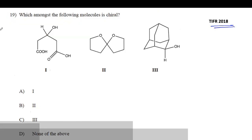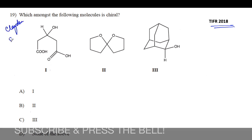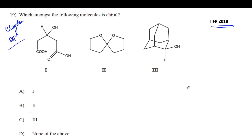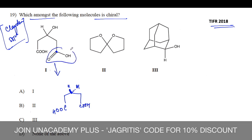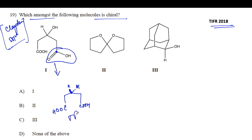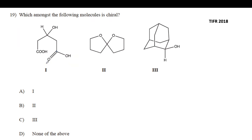Moving on to the TIFR 2018 question. This has been directly taken from the Claydon solution manual — the original had more options but only three of these molecules are taken for this stereochemistry question. The question asks: which of the following molecules is chiral? It's very simple — first write the molecules properly. For the first molecule, whether you write the H or OH above or below, there is always going to be a sigma plane of symmetry, so this molecule is always achiral.